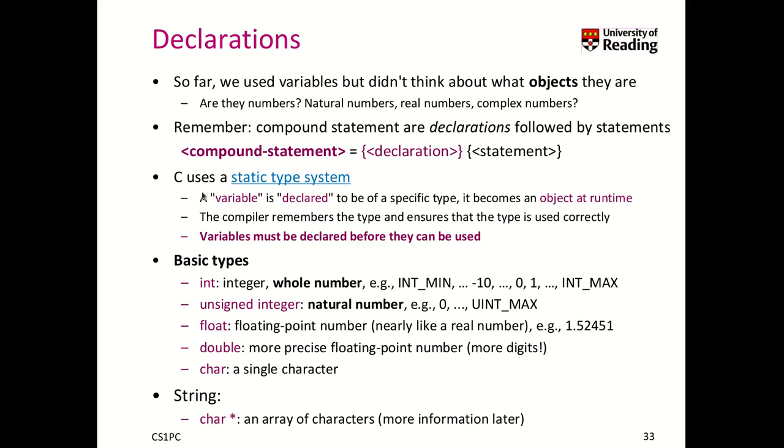So C is a static type system. That means when you create a variable you must declare it to be of a specific type and it becomes such a type at runtime. When I declare a variable of a given type, the compiler then remembers this type and makes sure that the type is used correctly. That also means we must always declare our variables what type they are before they can be used. Its static type system means that at runtime the type of this variable cannot be changed.